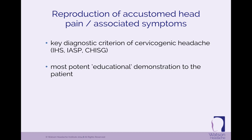When I talk about reproduction of headache, there are three factors you need to consider: the area of pain, the quality of pain, and the intensity of pain. Sometimes people say that's exactly the pain of my headache. But other times you don't reproduce the exact same quality, and in my experience that's not particularly important. Neither is the severity. Sometimes you may reproduce the head pain more severely than what they ordinarily get, or sometimes it's not as severe.